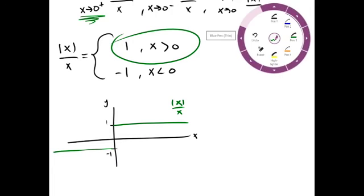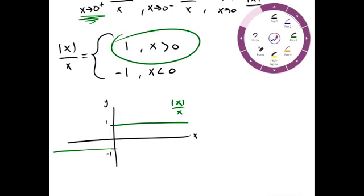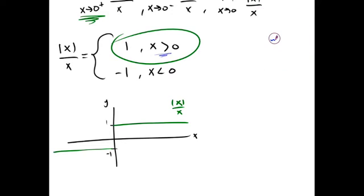So, if we're coming from the right, it's where x is greater than 0. And we can see, as we approach 0, we arrive at 1.